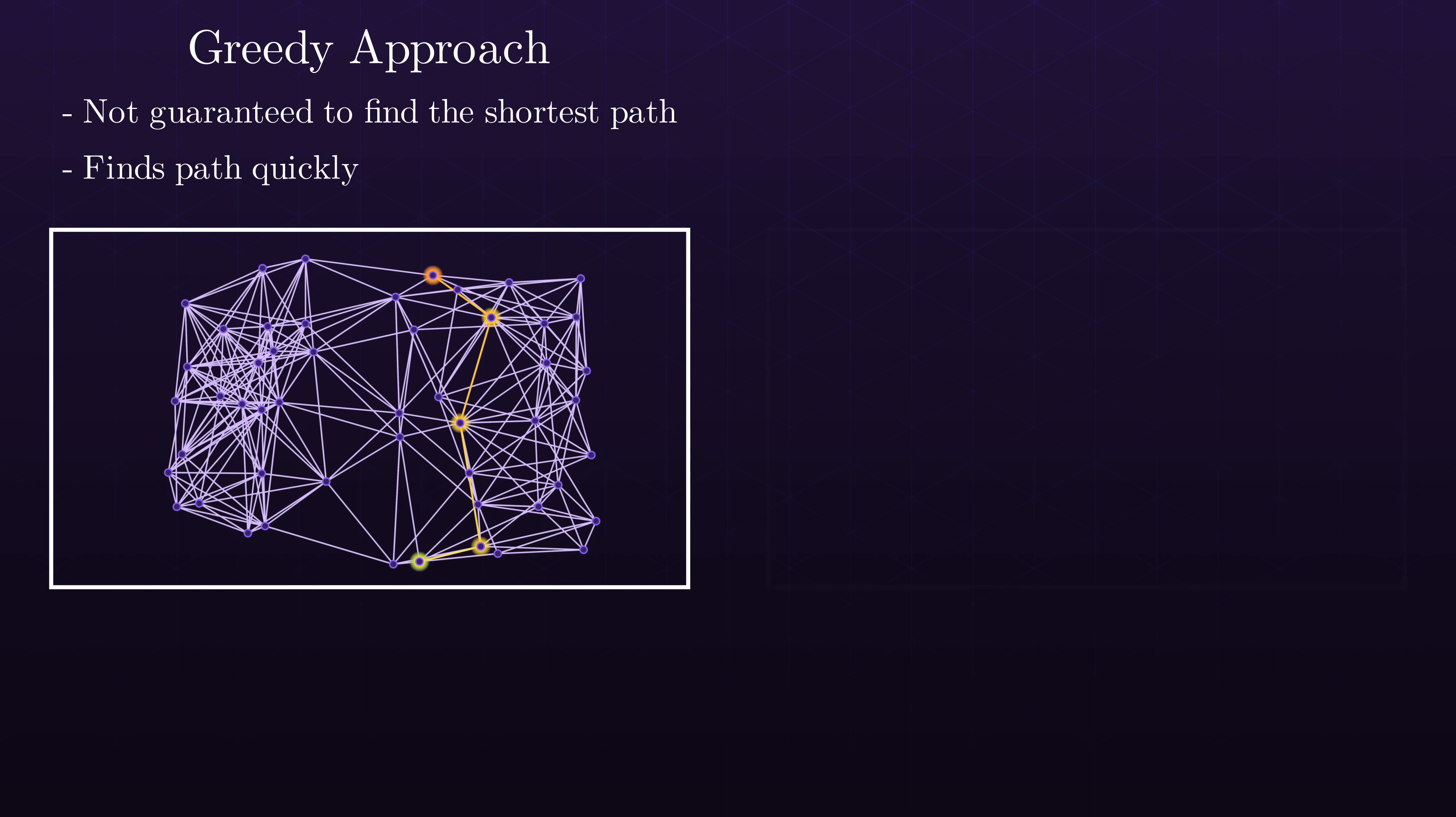The other approach, uniform cost search, is the polar opposite. When it arrives at a node, it is guaranteed to have found the optimal path to that node. But as a result, it uselessly explores parts of the graph that it really should not need to.